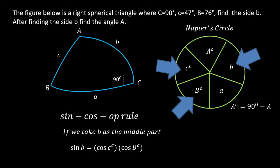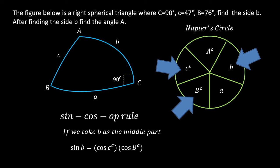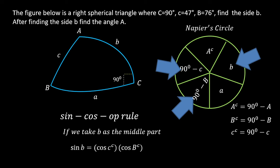The A complement, B complement, and C complement are defined as shown. Applying the sin-cos-of rule: the sin of the middle part (side B) is equal to the cos of the C complement times the cos of the B complement. Substituting, the C complement becomes 90 minus c, and the B complement becomes 90 degrees minus angle B.